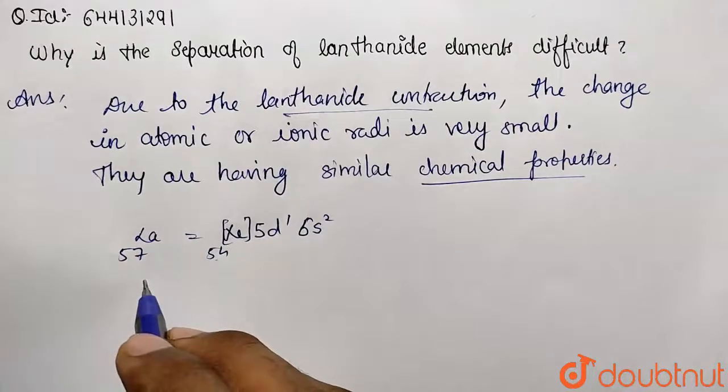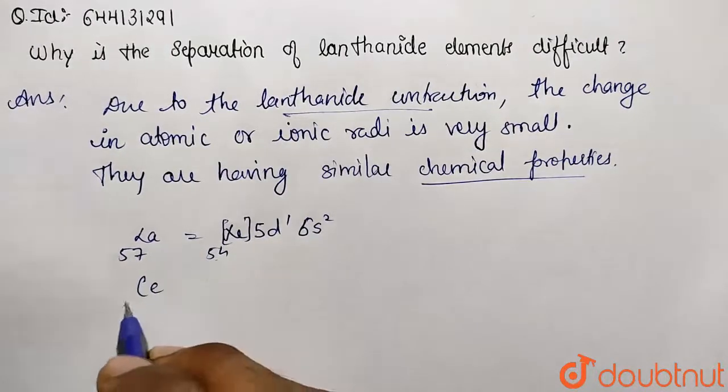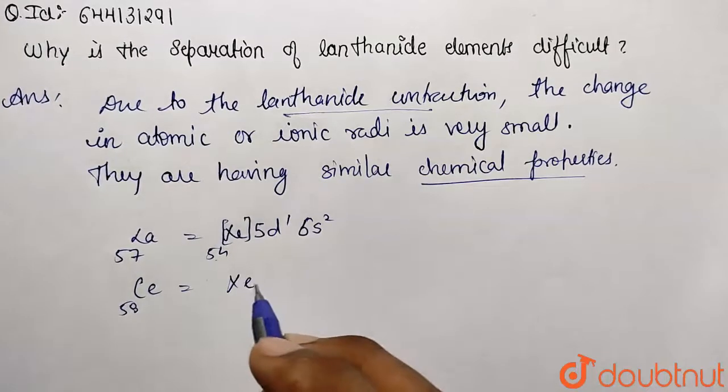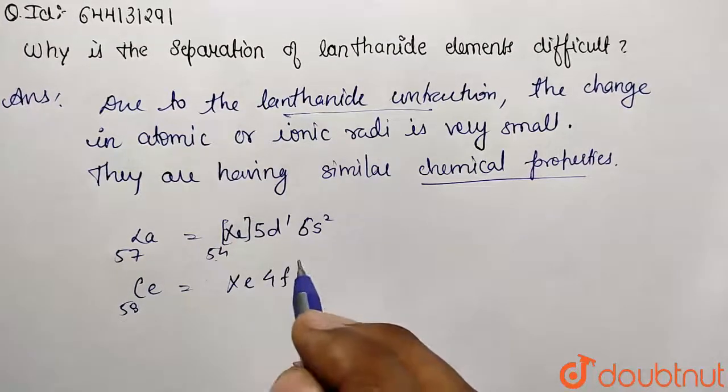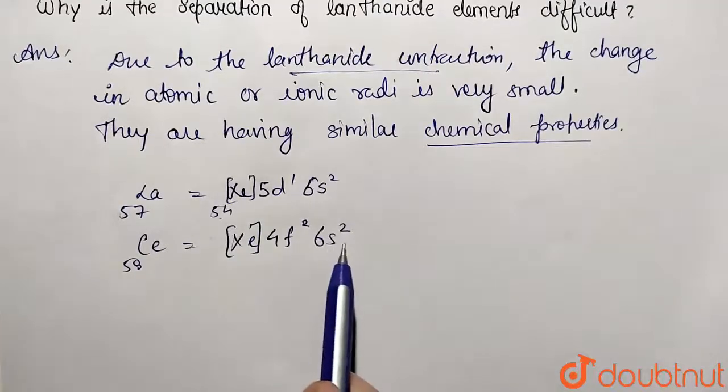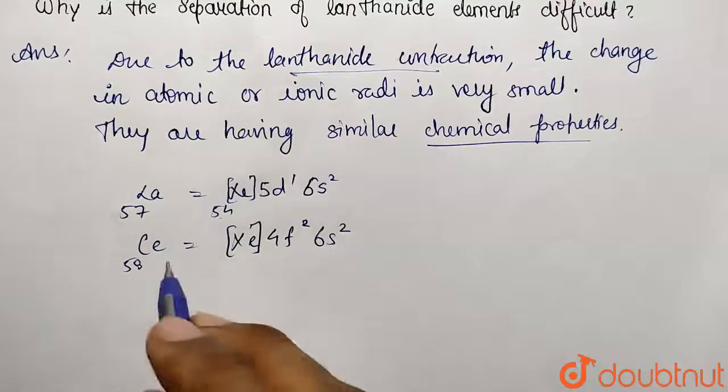Now if you want to take for lanthanide series element, let's take cerium. So this is 58. How will I represent them? This is going to be xenon. It is already containing 4f2 and 6s2. So this is for cerium.